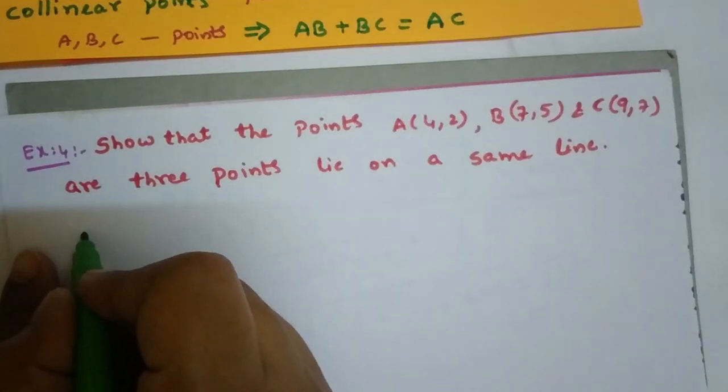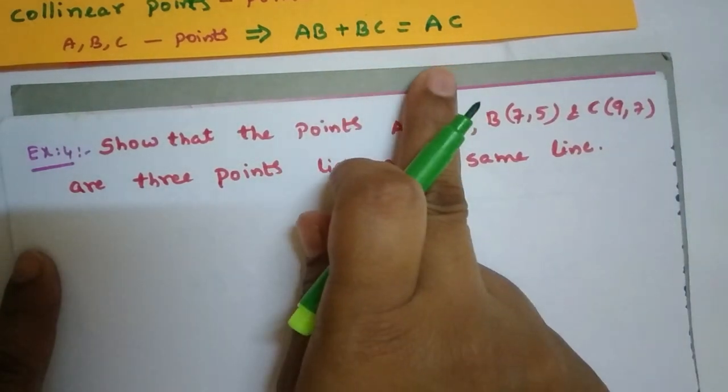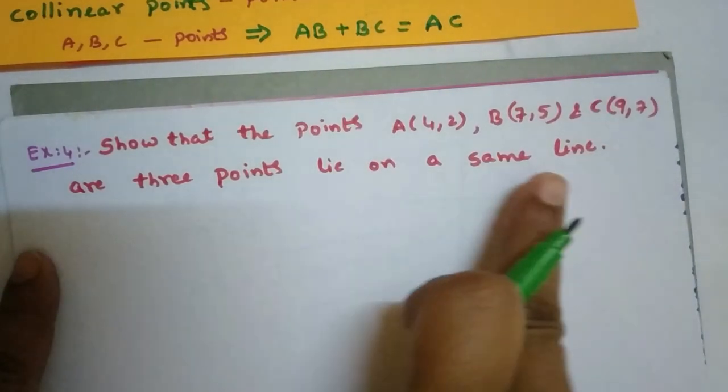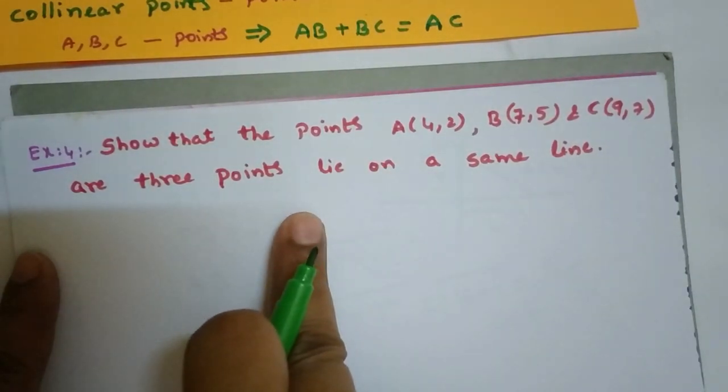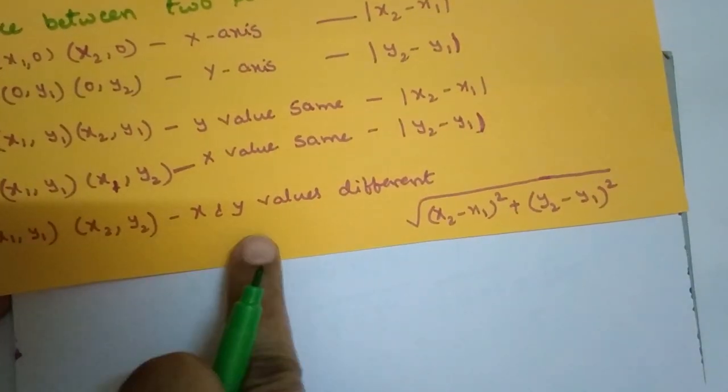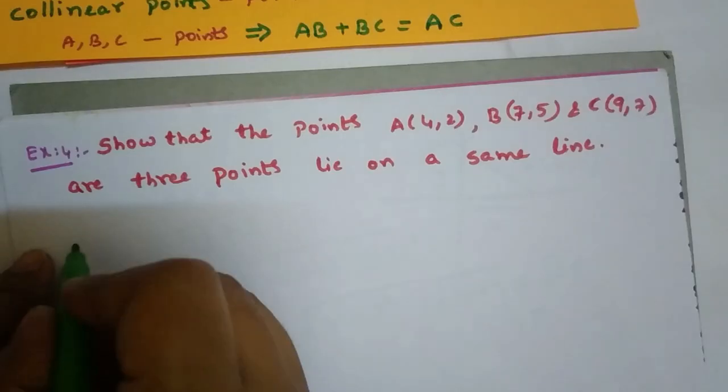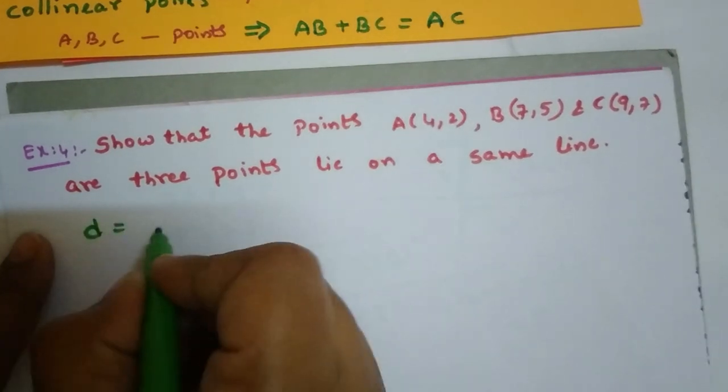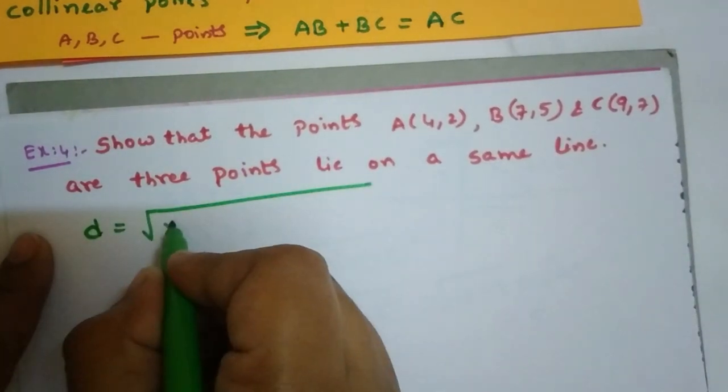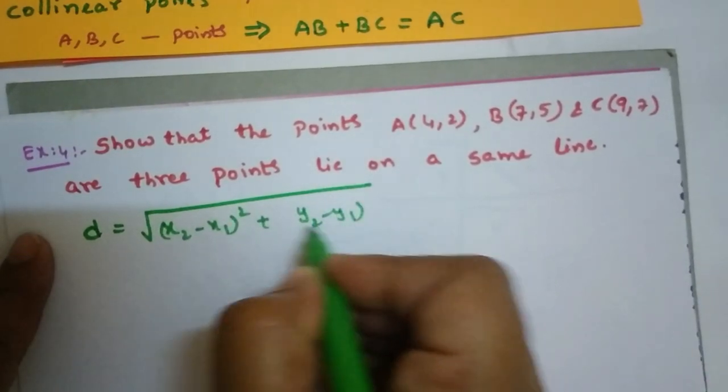So here we'll calculate the distances AB, BC, and AC. If the three points lie on the same line, then AB plus BC equals AC. The distance formula between two points is: distance D equals square root of (x2 minus x1) whole square plus (y2 minus y1) whole square.